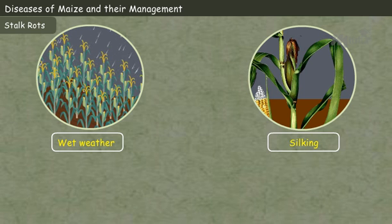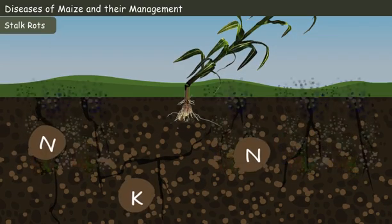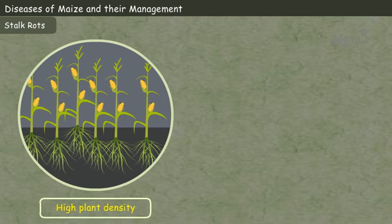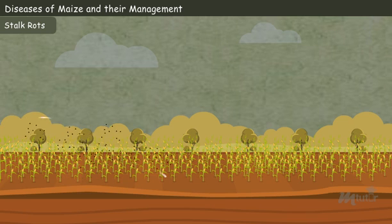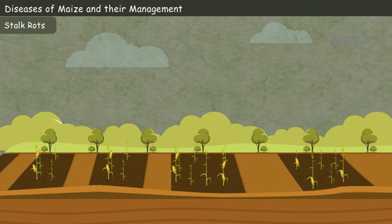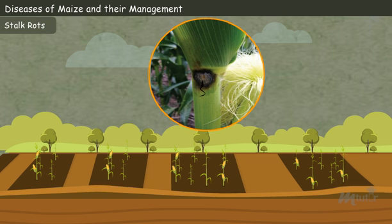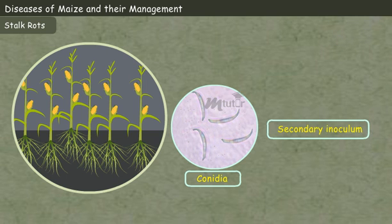Wet weather during silking in maize favors the disease. The pathogen can also occur in soils where there is increased nitrogen content and decreased potash content. Further, high plant density and early maturation of hybrids also favor the development of stalk disease. The virulent spores are carried away by winds and deposited at the base of the leaf sheath. The spores can infect the host plant either by penetrating directly or via wounds caused by insects such as stem borers. Conidia are produced asexually on the host, which serve as the secondary inoculum.